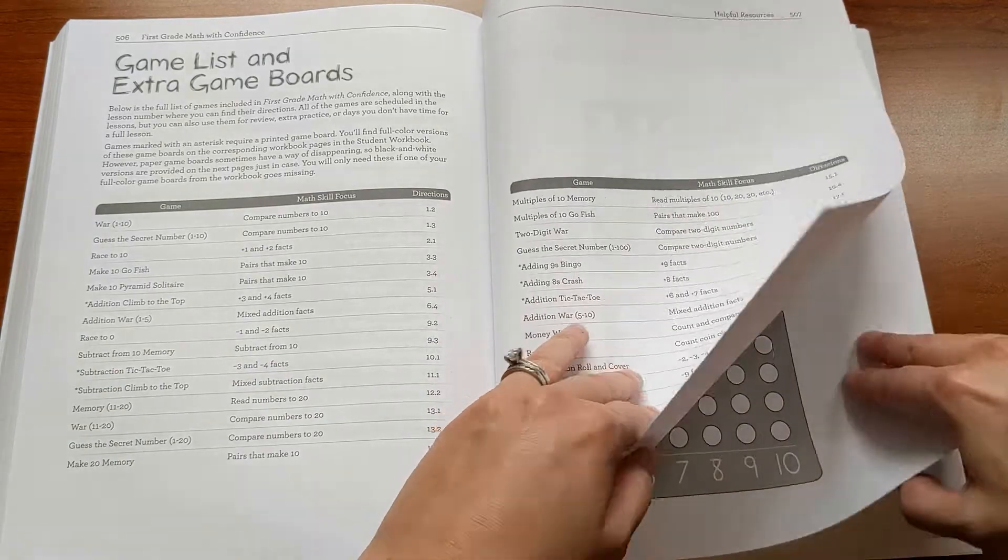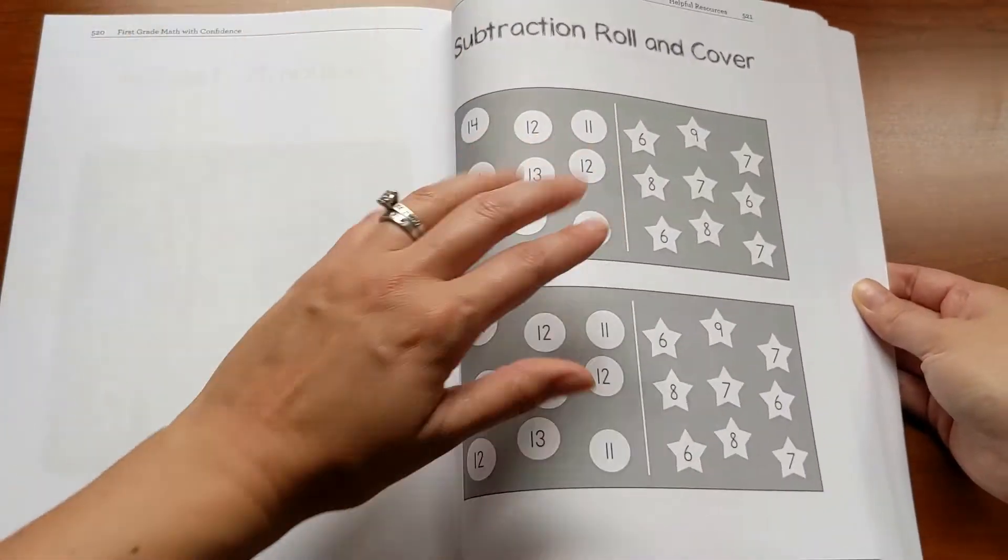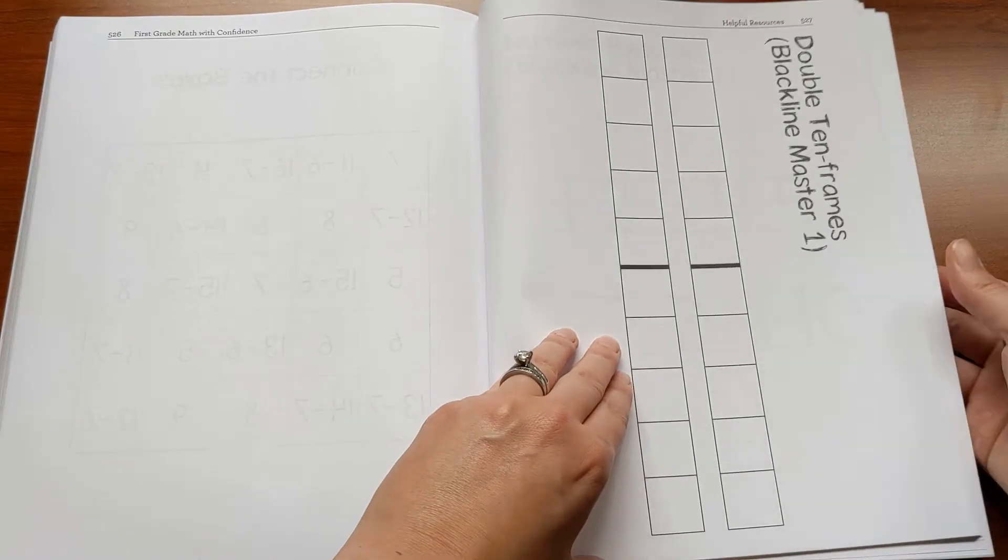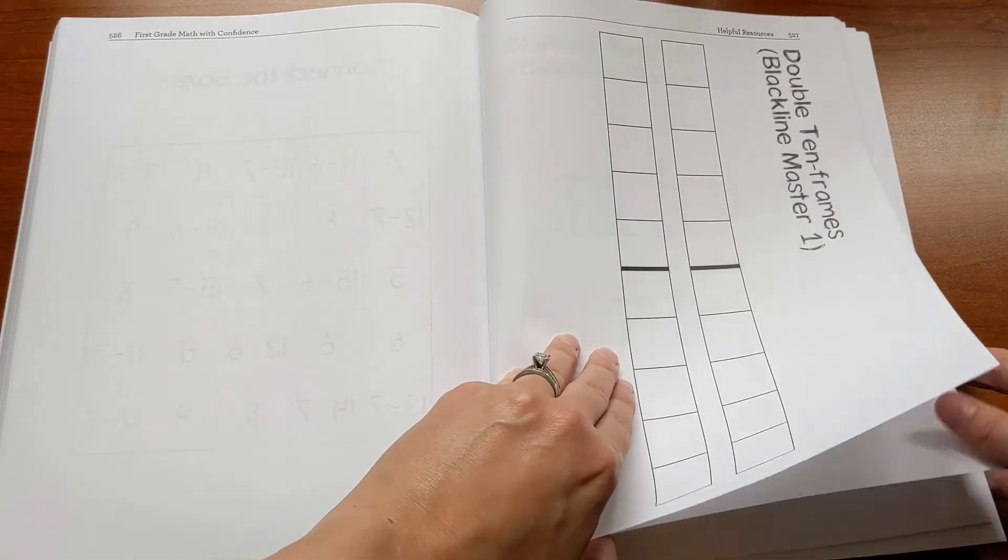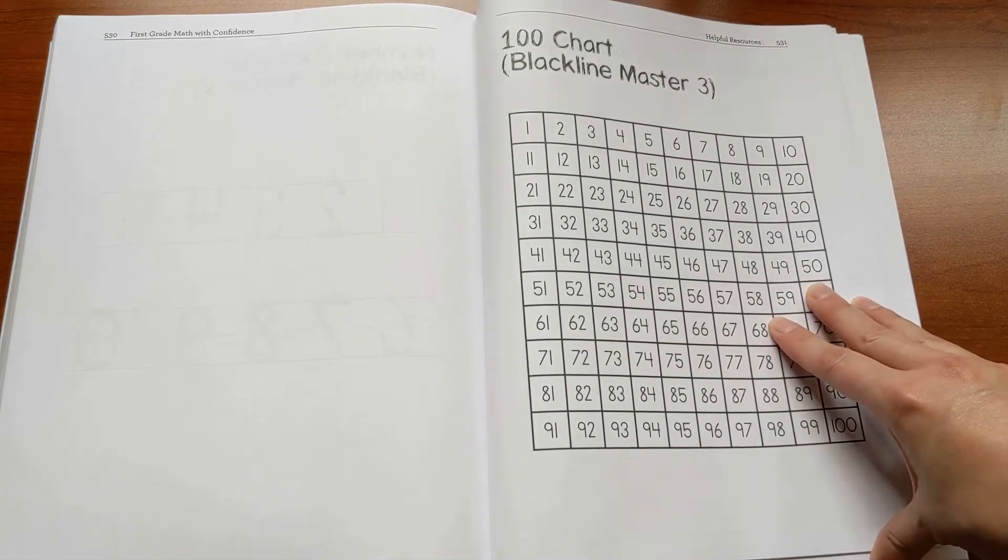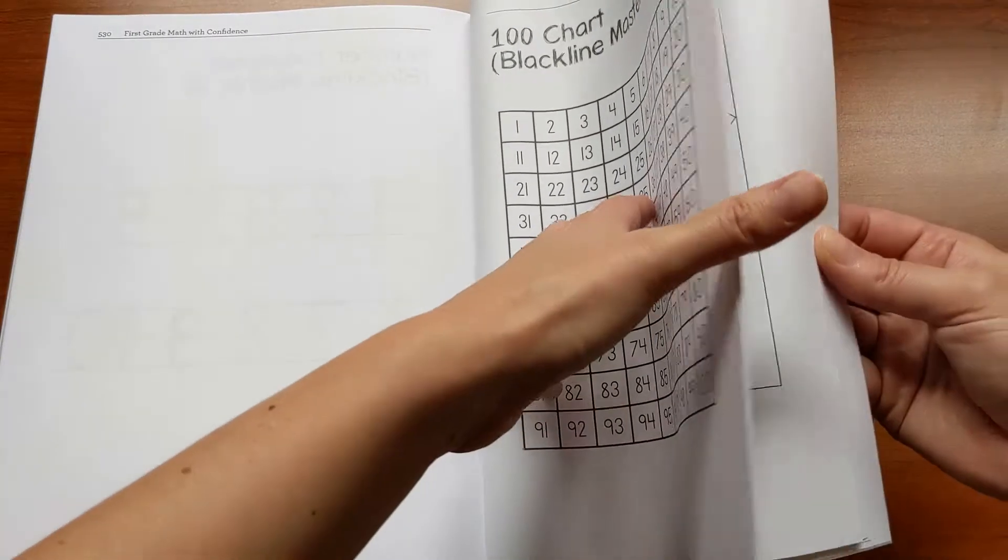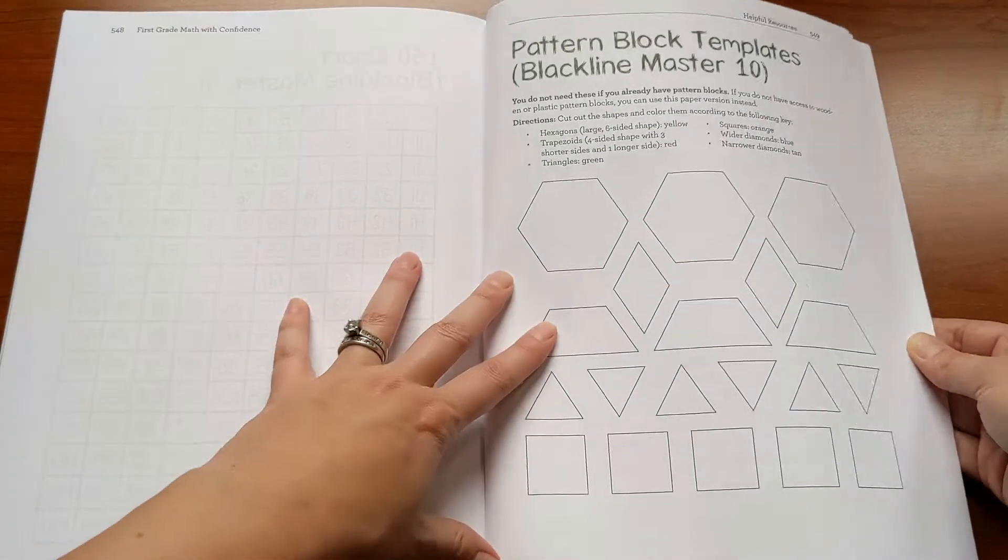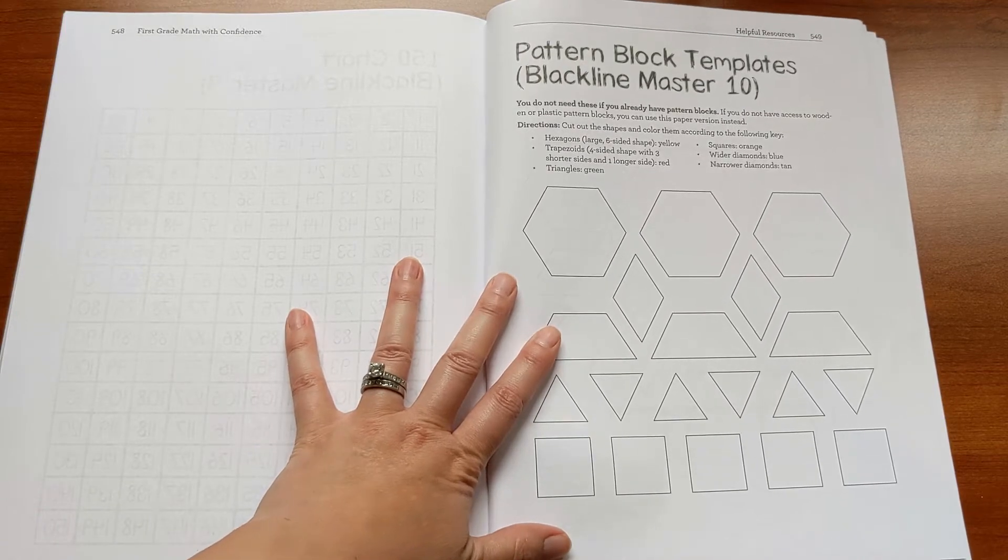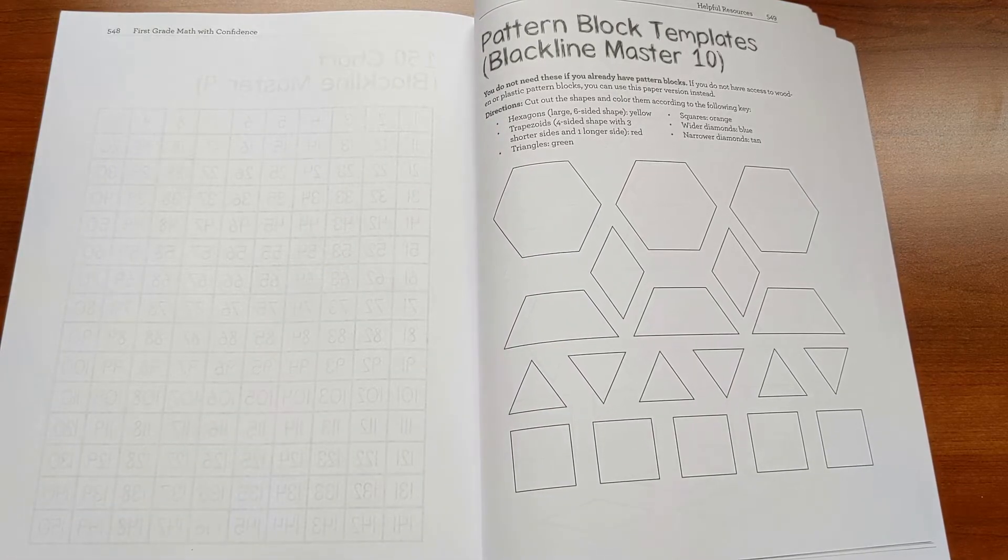There's also the game list and extra game boards in case you lose any throughout the year, because that happens sometimes. These are full color versions—these are all in the workbook. And then there's blackline masters at the end. A few of these you'll use often throughout the year, like the double ten frames or the hundred chart. And I do suggest that you pull those out and put them in a plastic page protector and a binder to make it easy to keep track of them. And then there's also a few things at the back here. So for example, if you're overseas or in a place where you can't get pattern blocks, I include templates in the back so that you can make your own. So you can truly use household items and what's in here to teach Math with Confidence.